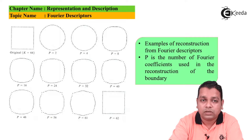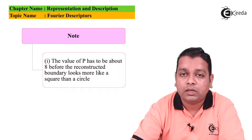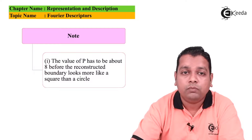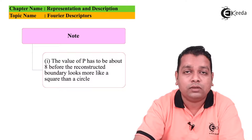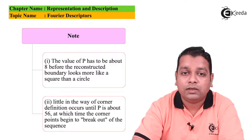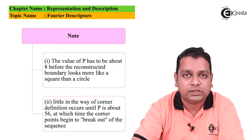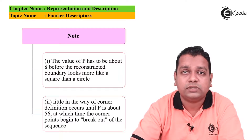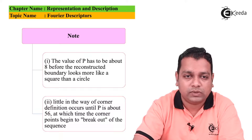We can note first that P has to be about 8 before the reconstructed boundary looks more like a square than a circle. The second note is that little in the way of corner definition occurs until P is above 56 — we have shown the value 62 at which time the corner points begin to break out for the sequence.